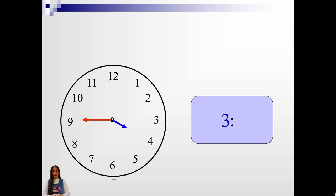3:30 or half past 3. What time is it? 3:45. What time is it? 3:05. What time is it? 4:12. What time is it? 4:25. What time is it?